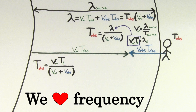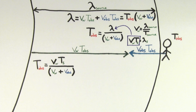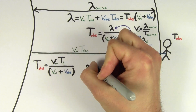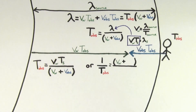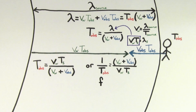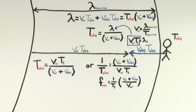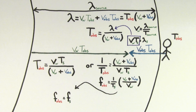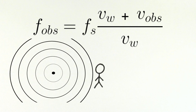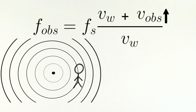Physicists prefer talking about frequency more than period, so we can convert by inverting both sides. One over the observed period is just the frequency experienced by the observer. On the right-hand side, pulling out one over the period of the source leaves the velocity of the wave plus the velocity of the observer divided by the velocity of the wave. And since one over the period of the source is just the frequency of the source, we get the final formula for the frequency experienced by an observer moving toward a source of sound. Note that the faster the observer moves, the higher the note or pitch.